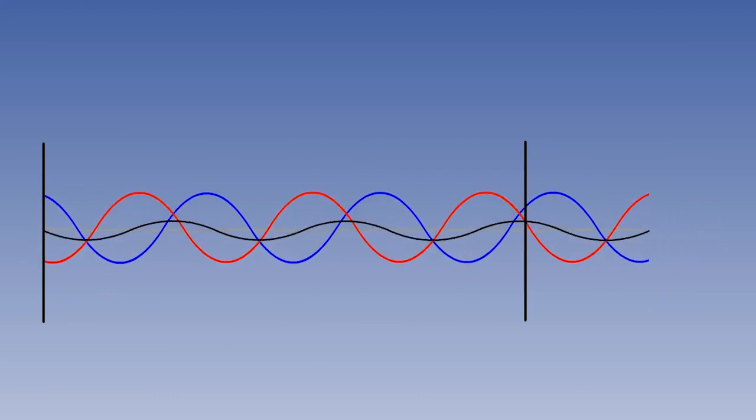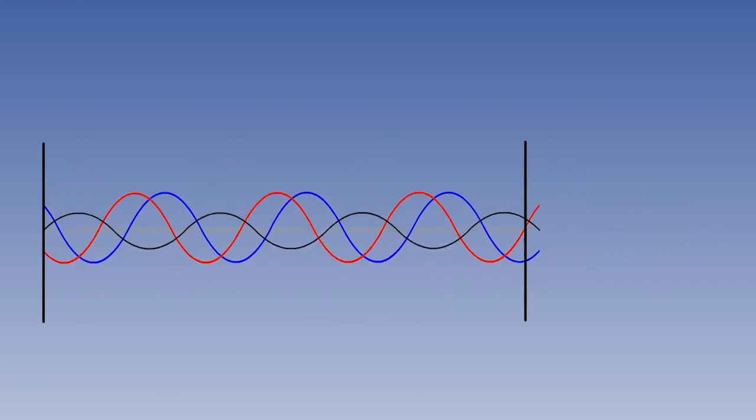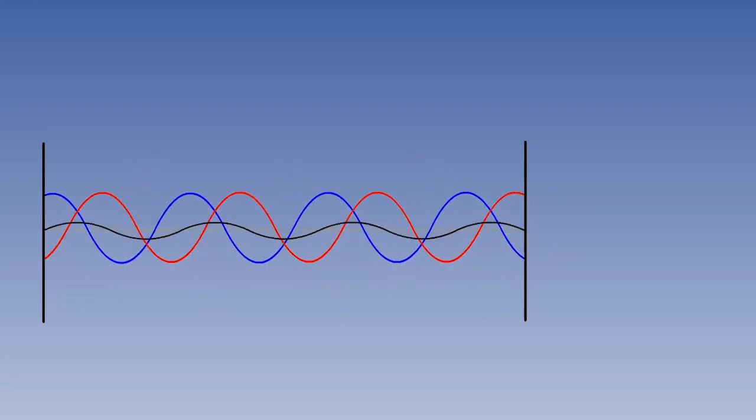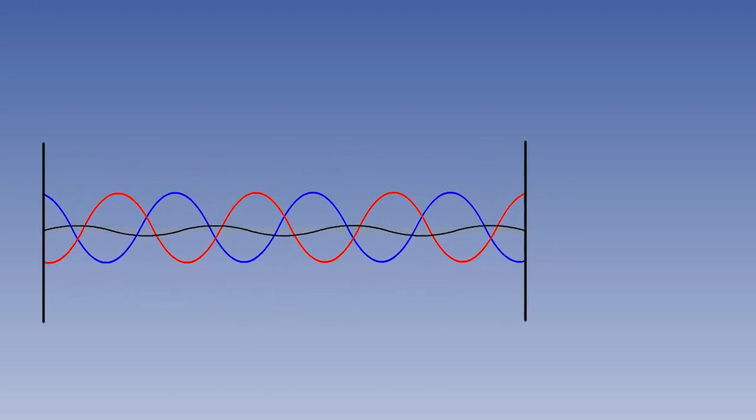However, if the prism rotates about its sensitive axis, the number of wavelengths in each path length remains the same, but the path lengths change. This means that the frequencies must change.